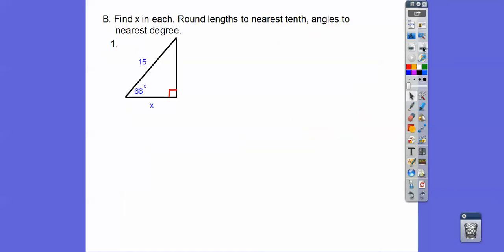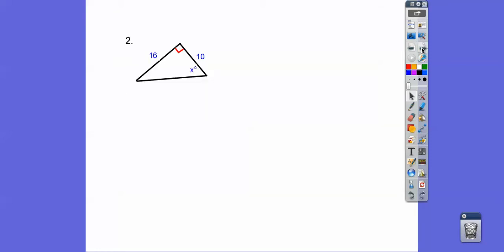Find x round to the nearest tenth, the sides and the angles to the nearest degree. You got to recognize this is an adjacent and hypotenuse cosine ratio. So the cosine of 66 is adjacent over hypotenuse. Get the cosine of 66, cross multiply, 6.1.